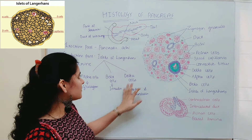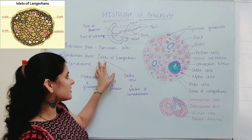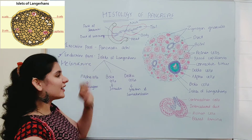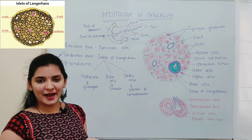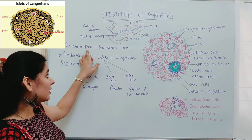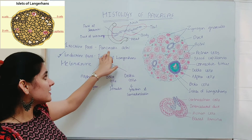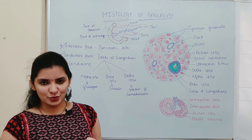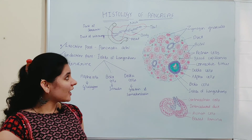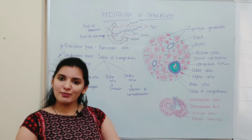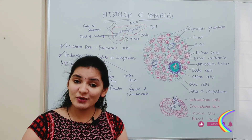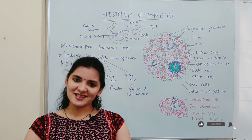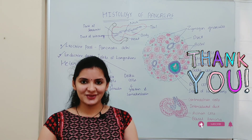So that is about the three types of cells in the islets of Langerhans forming the endocrine part of the pancreas, whereas the exocrine part — pancreatic acinae — secretes pancreatic juice. That is all about histology of pancreas. I hope this video will be useful. If you like this video, please hit the like button and subscribe to my channel. Thank you.